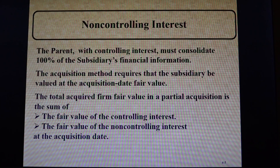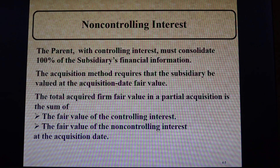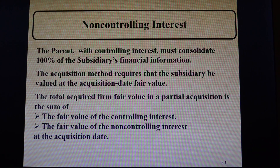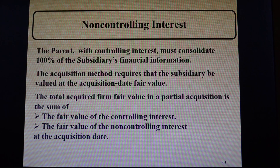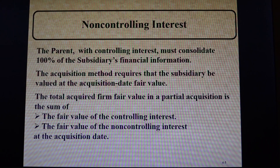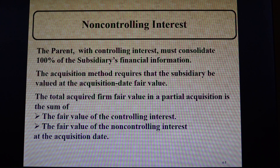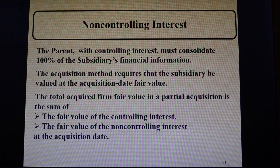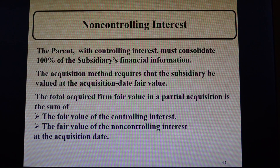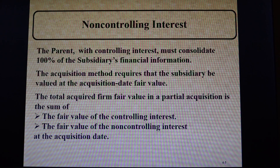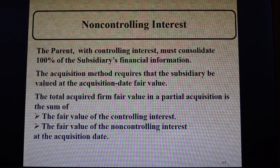The acquisition method requires that the subsidiary be valued at the acquisition date fair value — that should sound familiar, nothing changes there. When you have a non-controlling interest in the sub, you have to determine the total firm fair value, and that's done by adding the fair value of the controlling interest to the fair value of the non-controlling interest at the acquisition date.